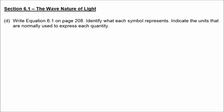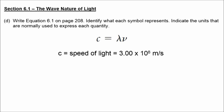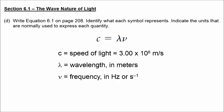Equation 6.1 on page 208 looks like this. C stands for the speed of light, which is 3 times 10 to the 8th meters per second. The Greek letter lambda represents the wavelength, which is normally measured in meters, and the Greek letter nu represents the frequency, which is normally measured in hertz, or inverse seconds.